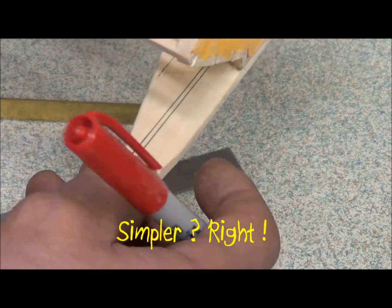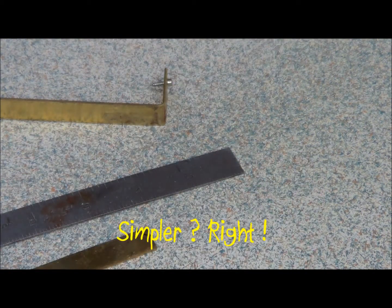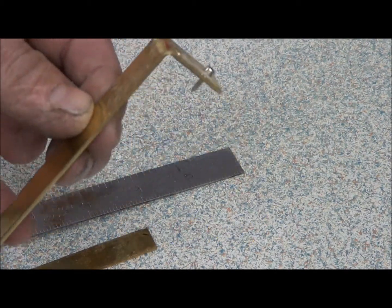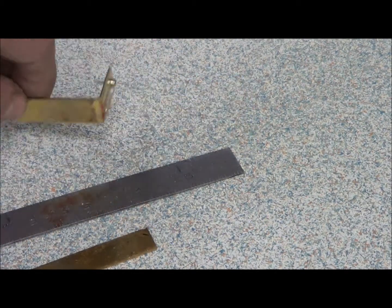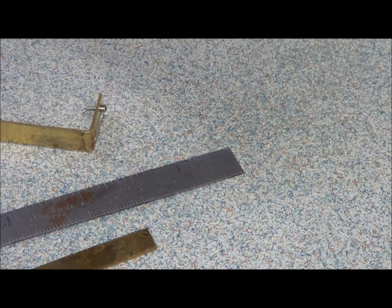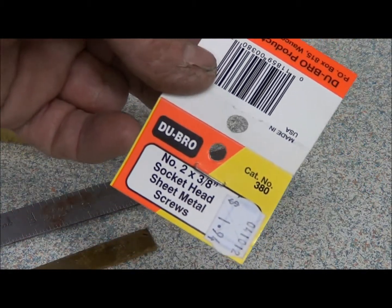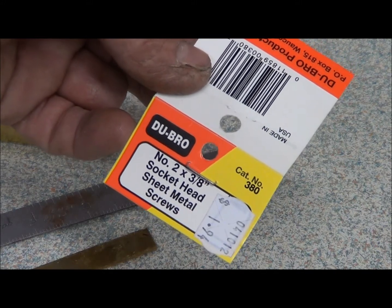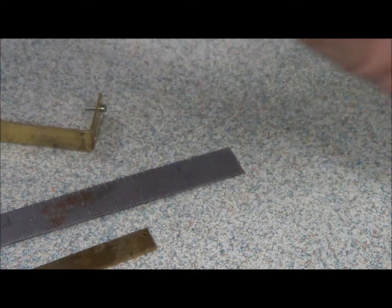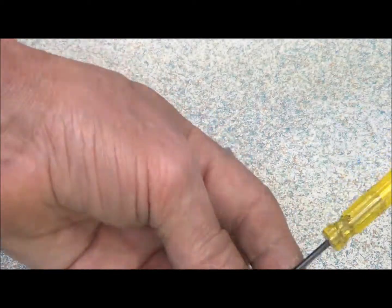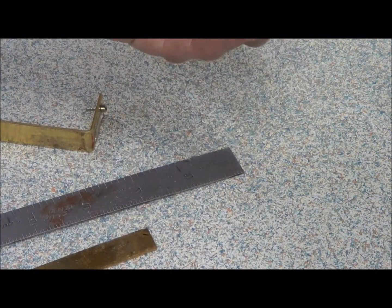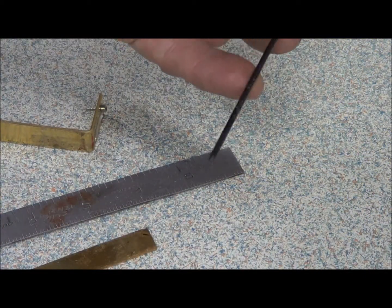This is basically what I got to start with. I'm using Dubro's 2 by 3/8 socket head sheet metal screws, which is nice because you can use one of these fancy screwdriver things here that's like an allen wrench head. You won't be slipping out of them.